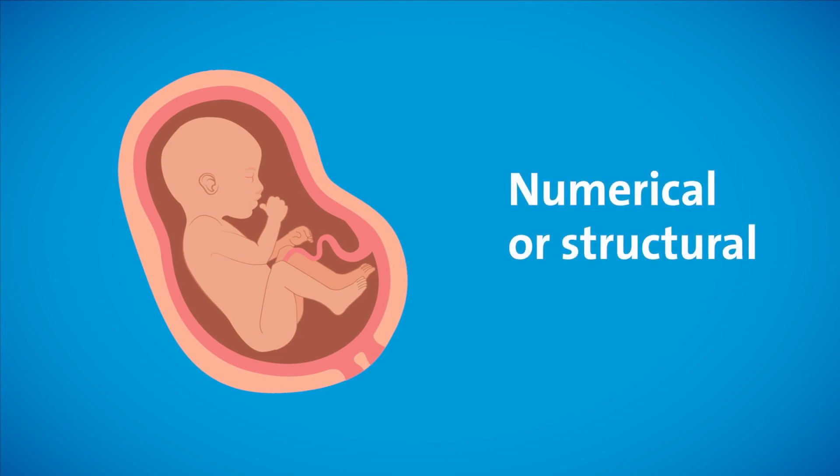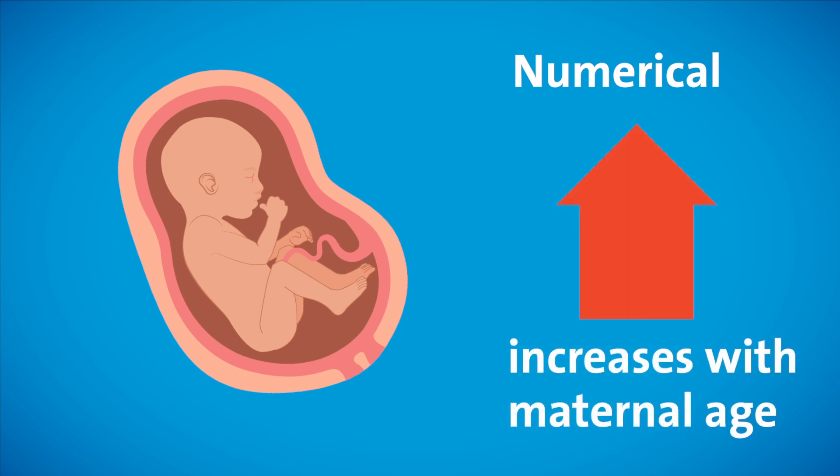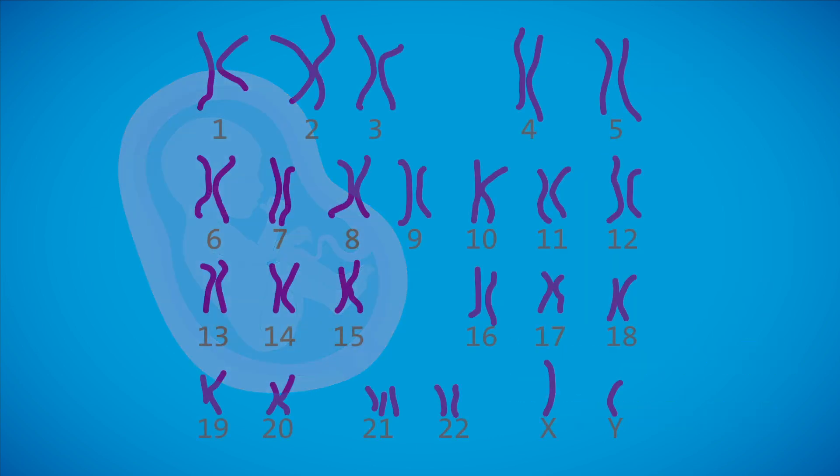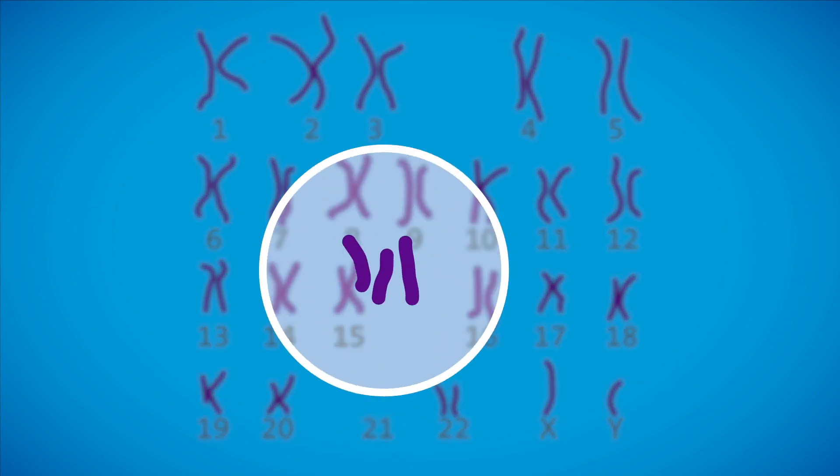Chromosome abnormalities may either be numerical or structural. For numerical chromosome abnormalities, the risk of having an affected pregnancy increases with maternal age, the most common being a trisomy, which is when there are three whole copies of a particular chromosome instead of two.